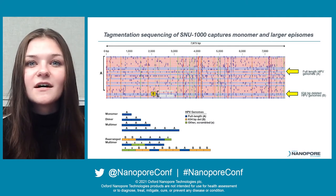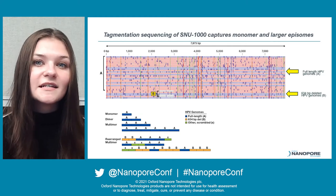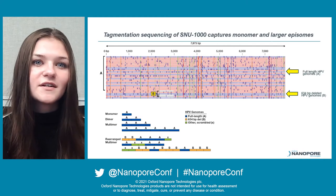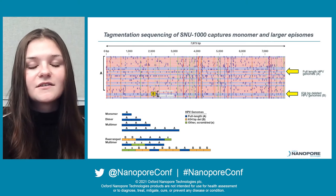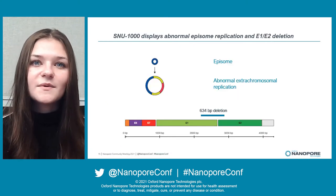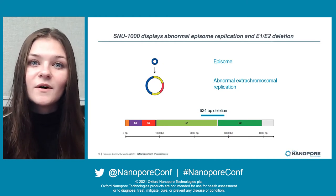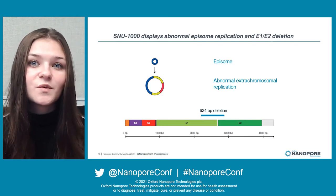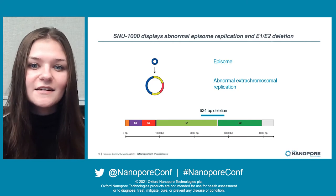The bottom image depicts the arrangement of HPV genomes from a few of our long SNU1000 reads. The blue represents full-length HPV16 genomes designated A, the orange the 634 base pair deleted genomes labeled B, and the green scrambled genomes of different sizes. There are HPV multimers — some having only full-length HPV and others a mix of deleted and scrambled genomes. The sequencing of SNU1000 shows that abnormal extra-chromosomal replication of HPV can occur, providing a mechanism for HPV to cause cancer without integrating. Interestingly, we find E1 and E2 deleted in epizomal HPV16, similar to what happens in integration. If these epizomal structures were to integrate, it could lead to a complex integration event resulting in HPV superspreading, such as that seen in Caskey and SCC152 cells.